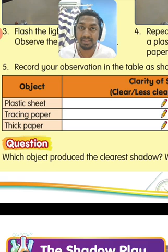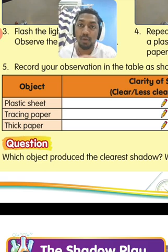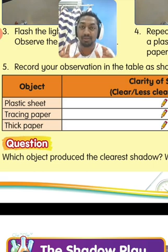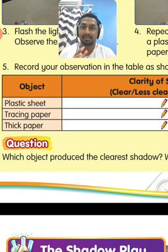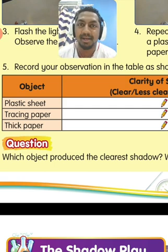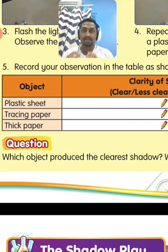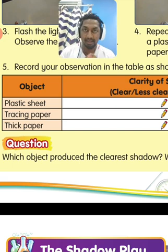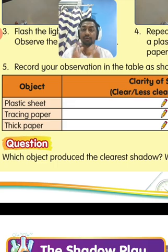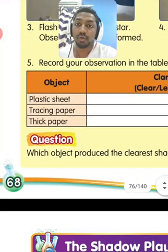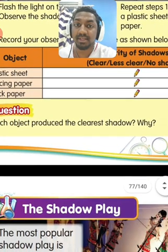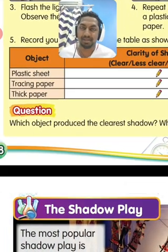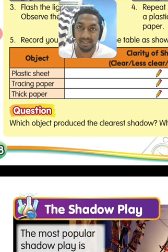Thick paper — we call it an opaque object. Opaque object means it doesn't allow any light to pass through it. So a clear shadow will be formed when a light is blocked by an opaque object. If the question is asked which object produces the clearest shadow, it will be thick paper, which is the opaque object.